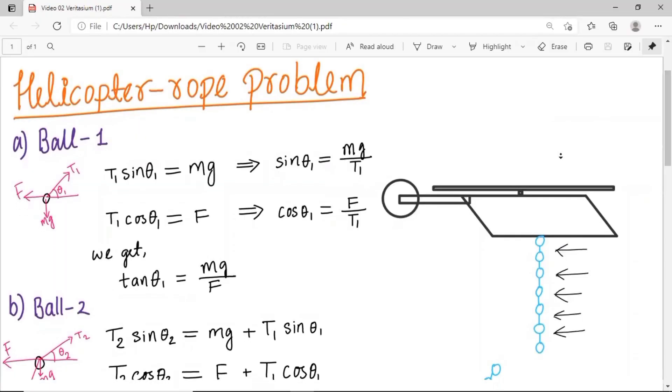This is our helicopter and this is the hanging rope. Since drag forces are considerable, it would apply a backward force on the rope. This is like a torque acting on the rope about the point where it's connected to the aircraft.